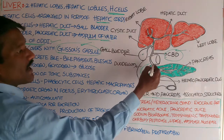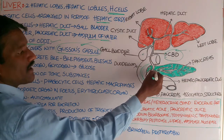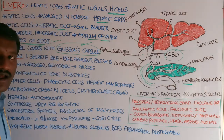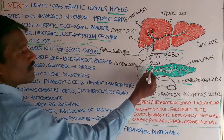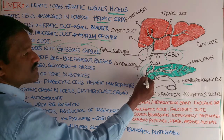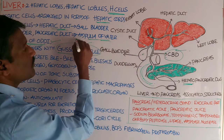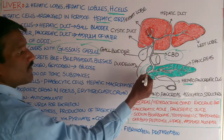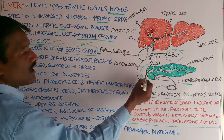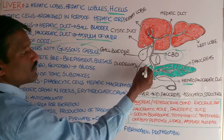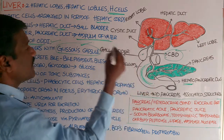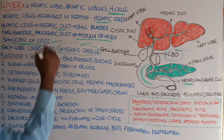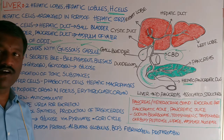The common bile duct and the pancreatic duct combine to form the hepatopancreatic duct. This duct forms the ampulla of Vater, which opens into the duodenum by the help of a sphincter called the sphincter of Vater.